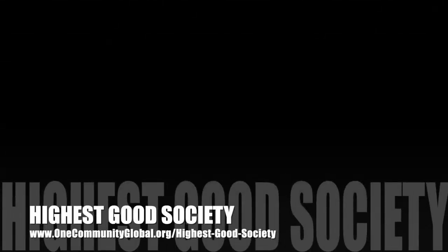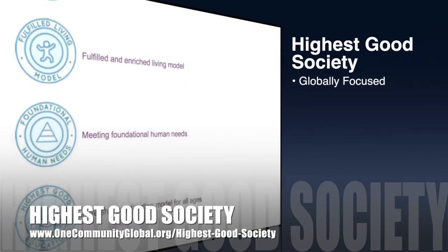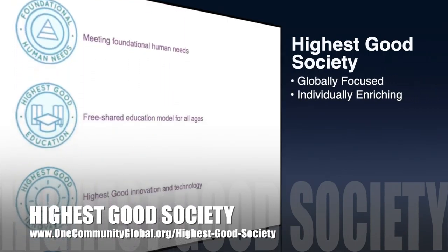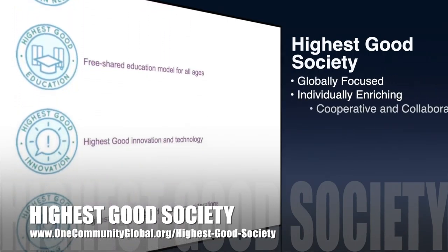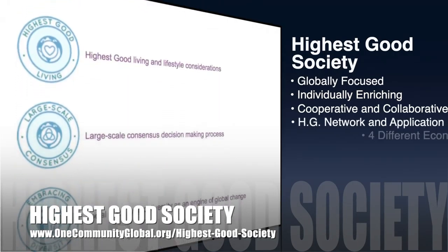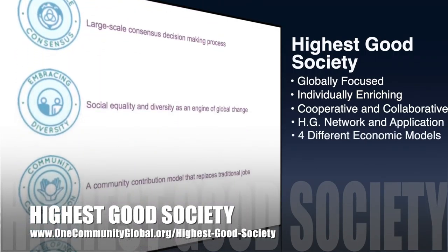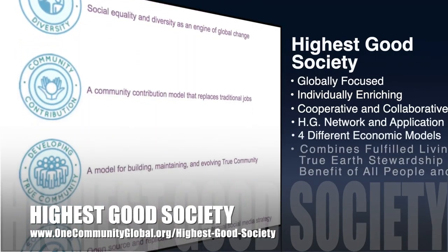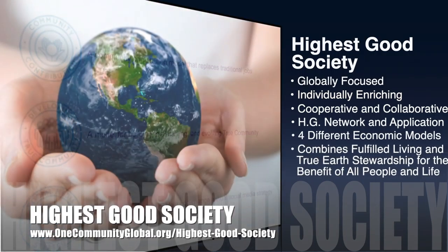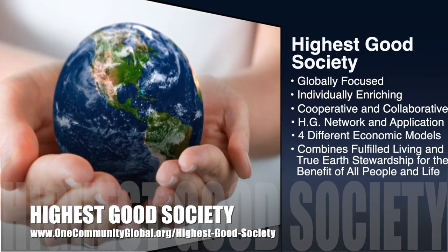The One Community approach to highest good society is globally focused, individually enriching, cooperative and collaborative. It includes a highest good network and application, four different economic models, and combines fulfilled living and true earth stewardship for the benefit of all people and all life on this planet.